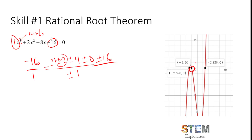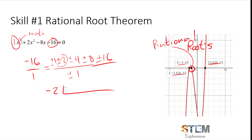Any other root that's present — if it's not a whole number — might be an irrational root. If we have a rational root and can identify it from the graph, what I want you to do is take that rational root and plug it into a synthetic division situation, and factor it out so that we can figure out exactly what the pair of irrational roots are.